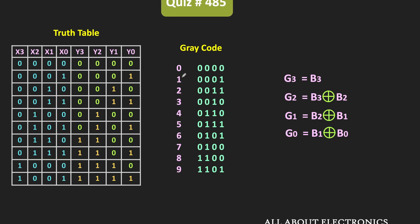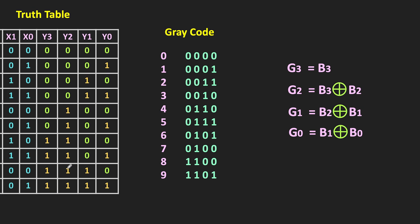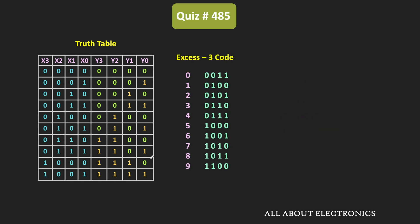If we compare the gray code with the Y3, Y2, Y1, and Y0 outputs, they are not matching. So the output of this circuit is not the gray code. The second option is the XS3 code. We know that in a binary number, if we add 3, we get the corresponding XS3 code.